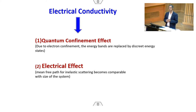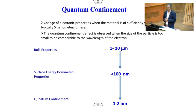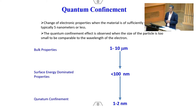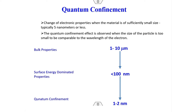The first effect — quantum confinement — is more important. It refers to the change of electronic properties when material is sufficiently small, typically 5 nanometres or less. This effect is observed when the nanoparticle size becomes comparable to the wavelength of electrons, which depends on the electron energy. Quantum confinement is typically observed at 1 to 2 nanometres particle size.